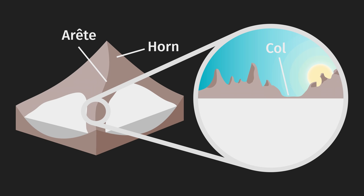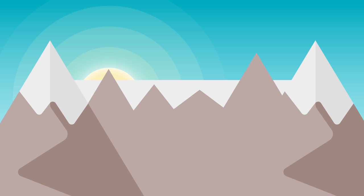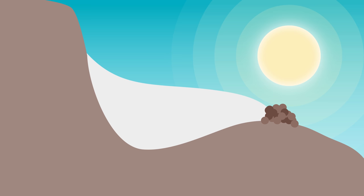Any of the landforms mentioned in the previous video — arêtes, horns, corries, et cetera — will become more exposed and so more dramatic once the mountain glaciers have fully receded. Mountain ice caps will smoothen and round any peaks that were submerged in the ice. Any unsubmerged peaks, nunataks, will, due to frost shattering, be made more jagged and rugged.